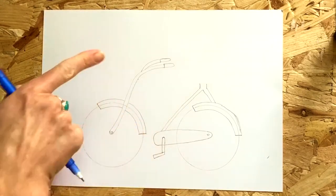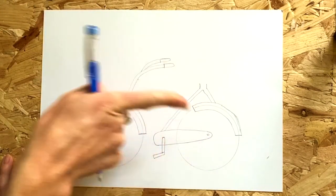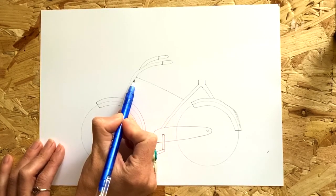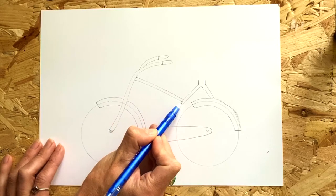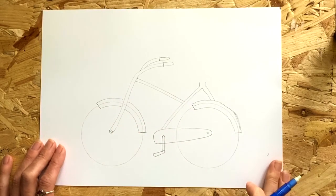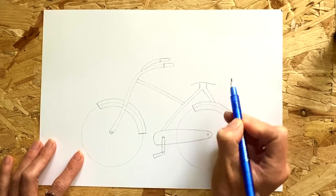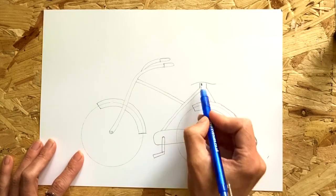Draw another line from the top of the handlebar curve going downwards towards the back wheel. You don't have to do yours facing downwards you could do yours straight across. Some bikes come with a bar that goes straight across rather than downwards.